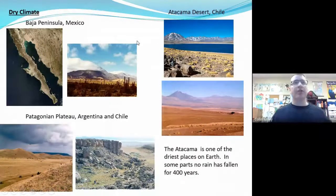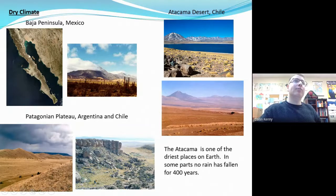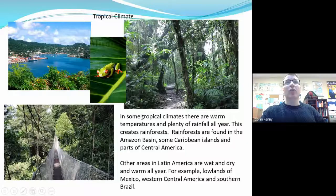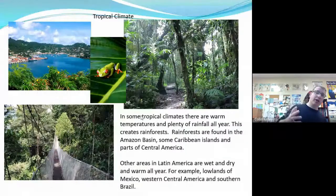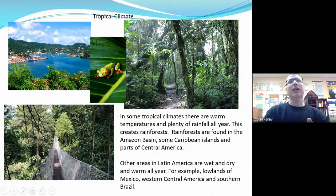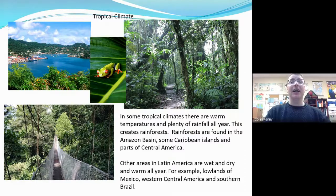One of the things we're going to see is there are going to be many dry climates. One spot would be Baja Mexico, often called Baja California — it's part of Mexico. We also have the Patagonian Plateau and deserts in Chile. We also have tropical climates — some places are super dry and others are tropical, like our rainforest. One of the cool things about the rainforest is just how much wildlife and diversity there is that we don't even know about. We're finding lots of interesting medicines, which is why deforestation is so scary.